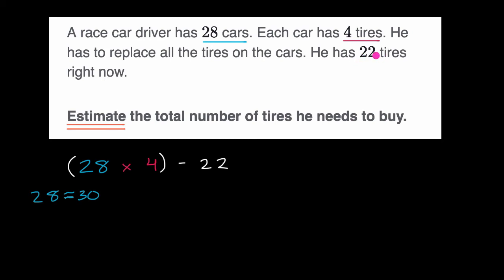And then the 22, that could be a lot easier to deal with if instead of it being 22, if that were approximately equal to 20. So 22 is approximately, roughly equal, that's what these squiggly equal signs mean, to 20.